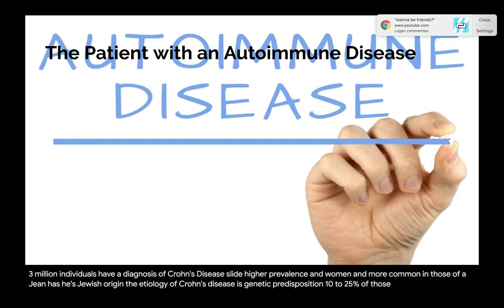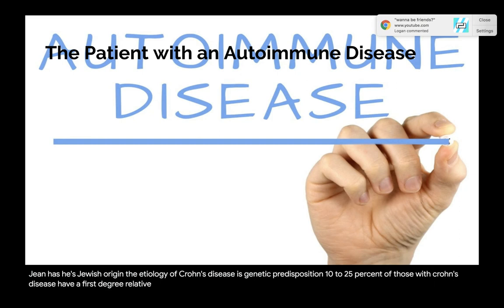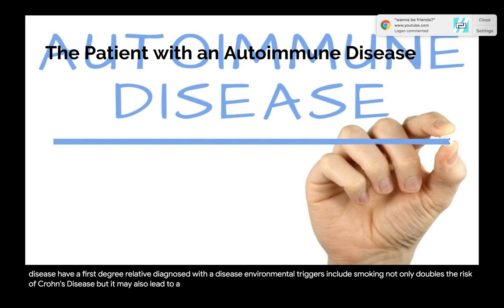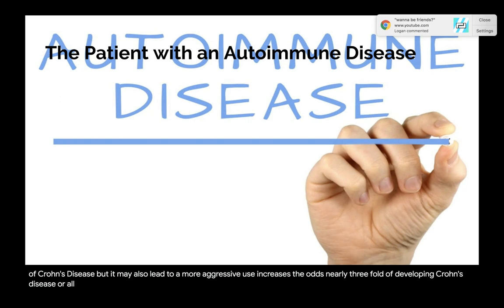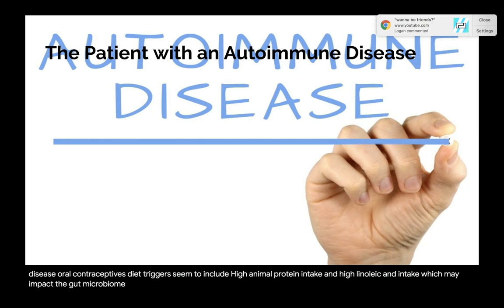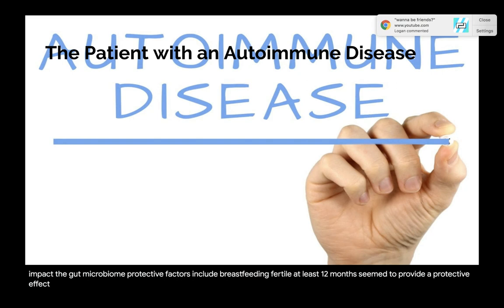Etiology of Crohn's disease: genetic predisposition — 10–25% of those with Crohn's have a first-degree relative with the disease. Environmental triggers include smoking, which not only doubles the risk but may also lead to a more aggressive form; antibiotic use increases the odds nearly three-fold; oral contraceptives; and diet triggers such as high animal protein intake and high linoleic acid intake that may impact the gut microbiome. Protective factors include breastfeeding for at least 12 months and high dietary zinc, fiber, and fish intake.